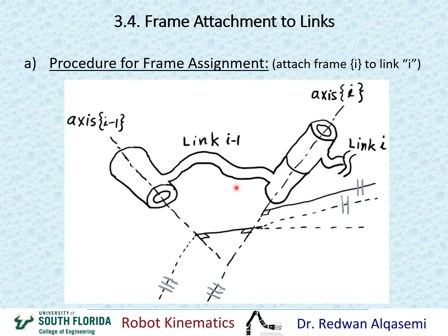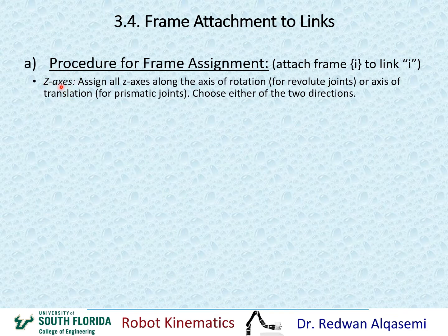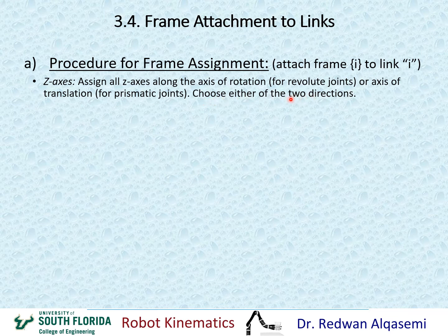Then we go to the X axis and assign all X axes for links and joints. Then we go to the Y axis and assign all Y axes to the links and joints. For the Z axis, assign all axes along the axis of motion — that's the axis of rotation for revolute joints, or the axis of translation for prismatic joints. Remember, prismatic joints have no rotational motion, so there is no axis of rotation, only an axis of translation.